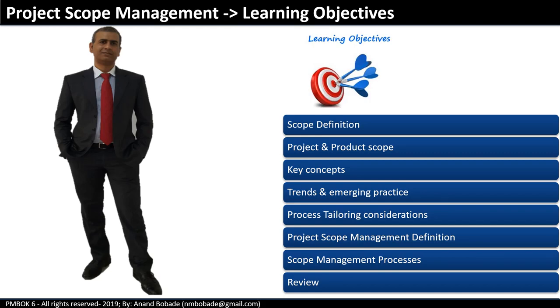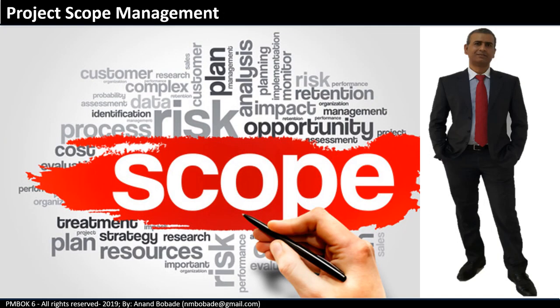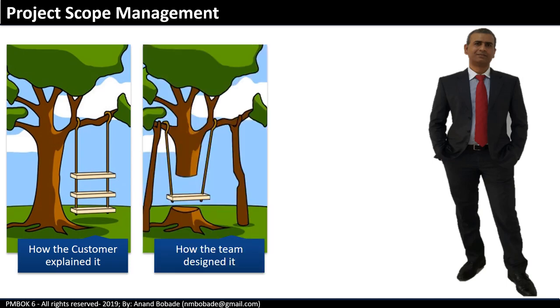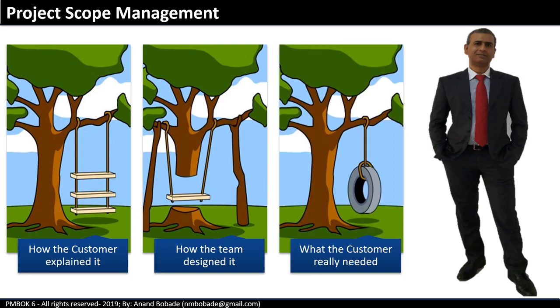Managing scope is one of the key challenges for a project manager. Project foundation depends on how clear your project requirements are. Project management and meeting customer expectations become extremely difficult when scope is not clearly defined — when customers fail to explain what they wanted, or the project team fails to clearly document customer requirements. For example, a customer wants to build a swing. This is how the customer explained his requirements, and this is how the project team designed it. As per the process, the team reviewed the design with the customer, but the customer may have signed the design without clearly understanding it.